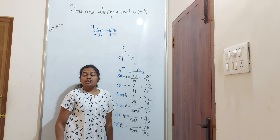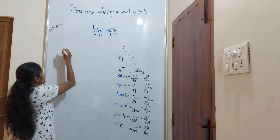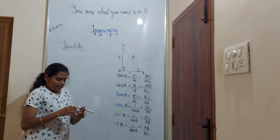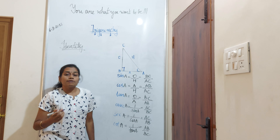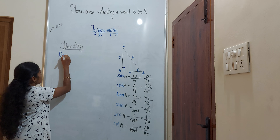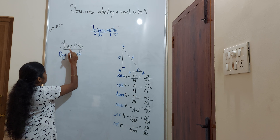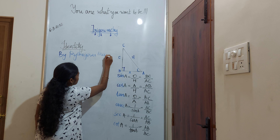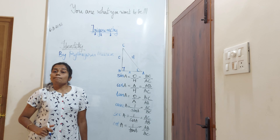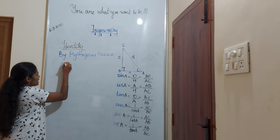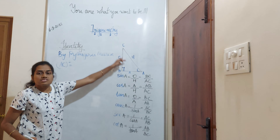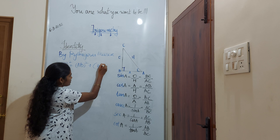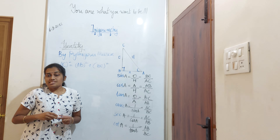Using these ratios, we are going to derive a trigonometric identity. So let us derive the trigonometric identity. We are going to use a concept which we studied in the earlier classes. Do you remember the Pythagoras theorem? By Pythagoras theorem, using this right-angled triangle: the square of the hypotenuse, that is AC square, is equal to the sum of the squares of the other two sides — AB square plus BC square. So this is my Pythagoras theorem.